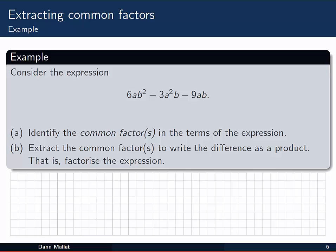Let's check out another one. This one's a little bit harder. I've got the expression 6ab squared minus 3a squared b minus 9ab. Again we're asked to identify the common factors in the terms of the expression. And then extract them and write the difference as a product. As usual if you want to stop now and have a go yourself, do so. And then come back and join me for the solution.